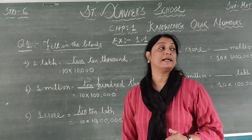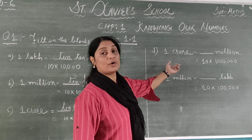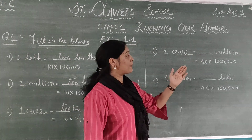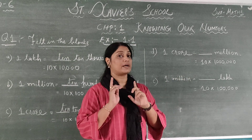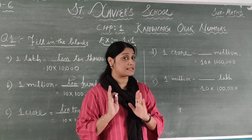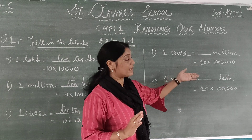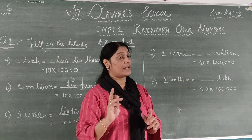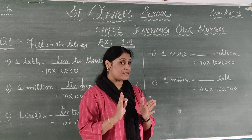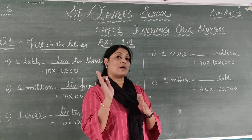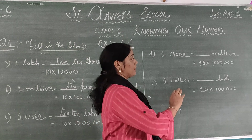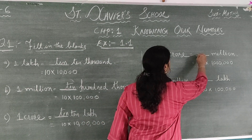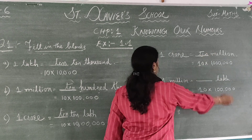Part D: 1 crore is equal to blank million. You have 1 million — 1 million has 6 zeros. You need to make 1 crore, which has 7 zeros. So you multiply by 10 and it becomes 1 crore. Again the answer is 10.